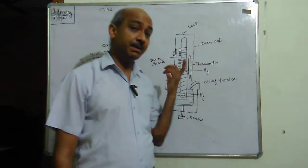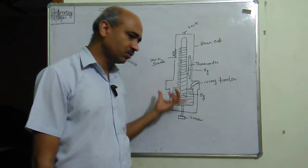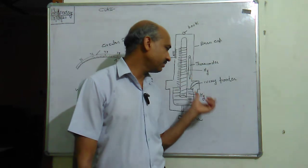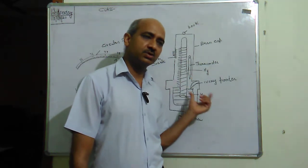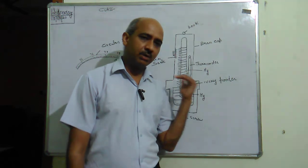What we have done is removed those demerits and made a new barometer called the Fortin barometer. Let us try to remind ourselves what are the demerits. What was the first demerit?